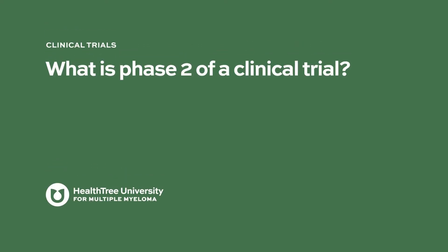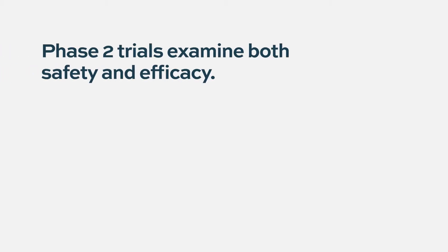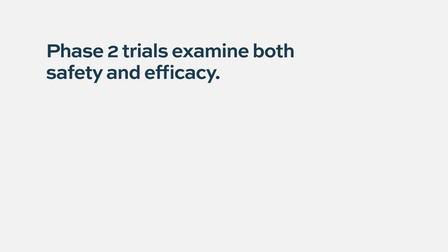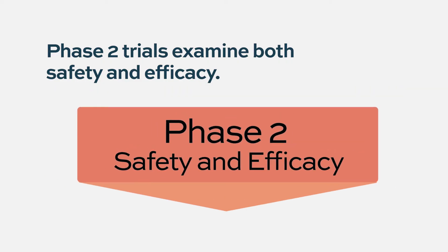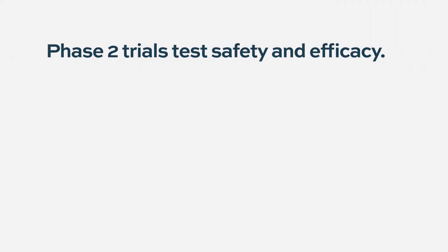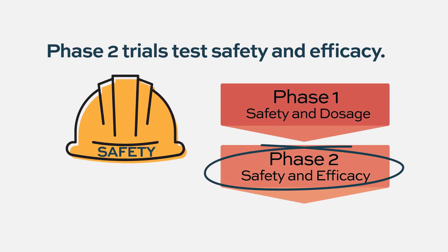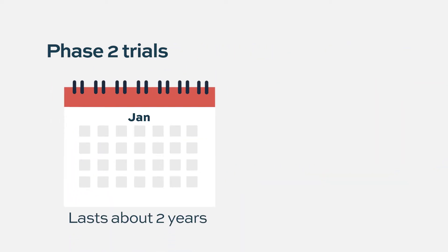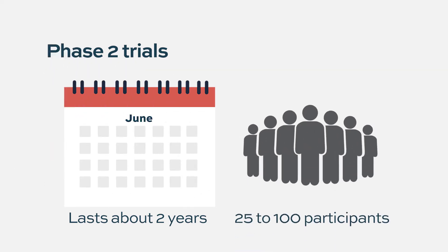What is phase two of a clinical trial? Phase two trials look at both safety and efficacy — it's a continuation of development of a drug. The phase two trial continues to give us safety data, and we're starting to get a real signal about the efficacy of a drug. These trials generally take a bit longer to conduct and include more patients.